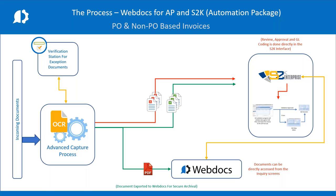Any documents that fail the process are going to go into what we call the verification station for exception handling — these are only the documents that don't pass the rules inside the system. Documents that pass all verification go straight into the S2K system via the S2K import utility for verification and matching. From there, documents are securely stored in WebDocs, accessible through the WebDocs interface or through the VAI interface with a button push.